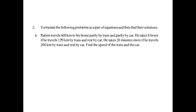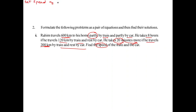Rahim travels 600 kilometers to his home — part by train and part by car. He travels in 8 hours. If he travels 120 kilometers by train and the rest by car, he takes 8 hours. If he travels 200 kilometers by train and the rest by car, he takes 20 minutes more. We need to find the speeds of the train and the car.